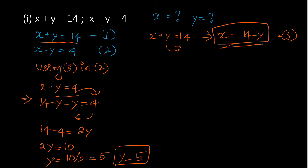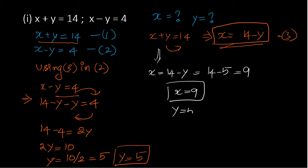Now substituting y equals 5 back, x equals 14 minus y equals 14 minus 5 equals 9. So the substitution method gives us the answer. In the first equation, we expressed one variable and substituted into the second equation to solve for y, then found x.